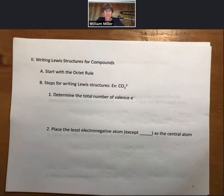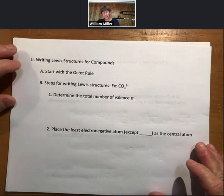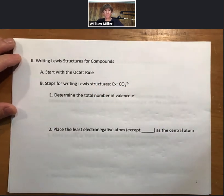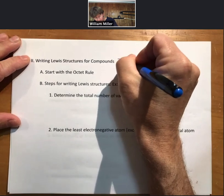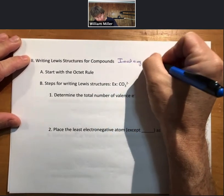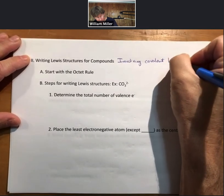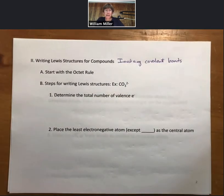When two nonmetals want to meet the octet rule, they will form covalent bonds. Co- meaning shared and valent meaning valence electrons. I've come up with a set of rules for writing Lewis structures for compounds involving covalent bonds. These involve typically two or more nonmetals sharing electrons, and we'll be able to show you how when you share electrons, you will get the eight that each of the elements wants.